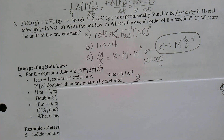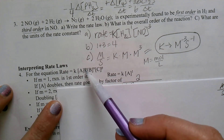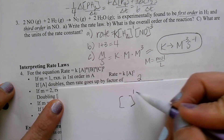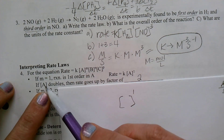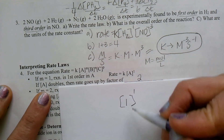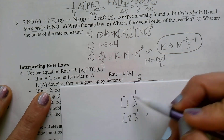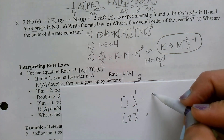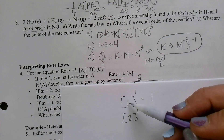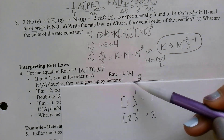Let's look at number 4. If the concentration of A is to the 1st order and the concentration doubles — say it goes from 1 to 2 — then 1 raised to the 1st power is 1, and 2 raised to the 1st power is 2. So if the concentration doubles, the rate doubles. The rate goes up by a factor of 2.